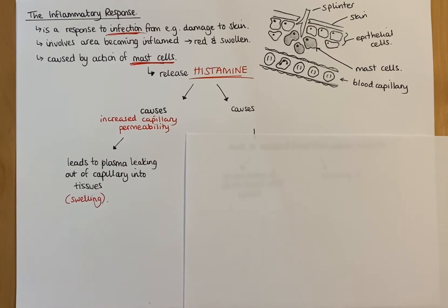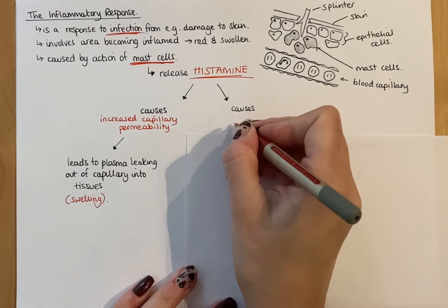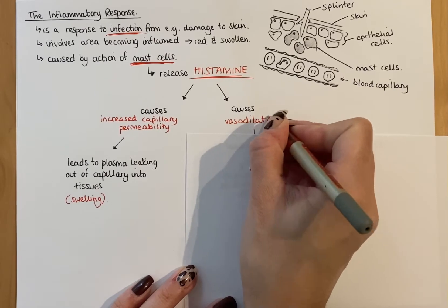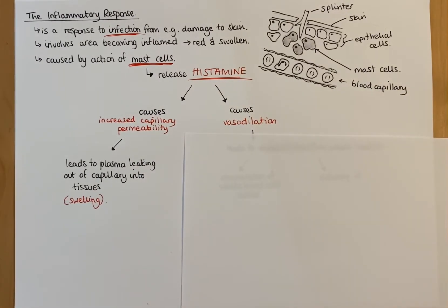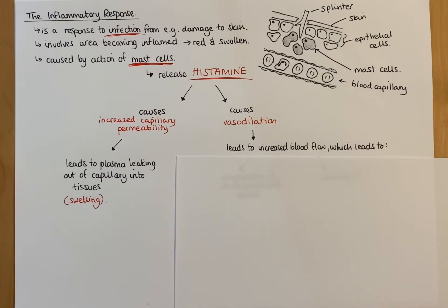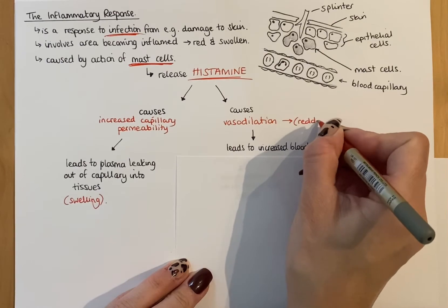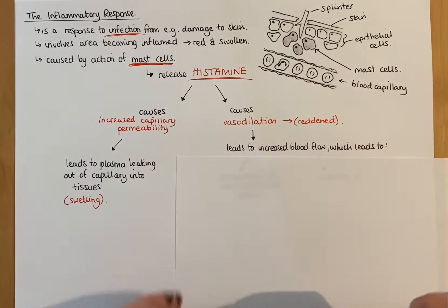The next effect of histamine - a really important one - is that it causes vasodilation. You'll have heard of vasodilation from Unit 2: vaso means blood vessels, dilation means widening. So the blood vessels widen and the lumen of that blood vessel widens, giving you increased blood flow. If those blood vessels dilate it also causes the area to become reddened, which is why inflamed areas are red - those blood vessels have dilated and you can see more of them.